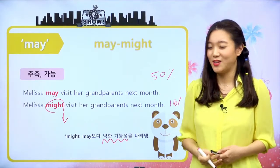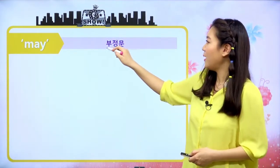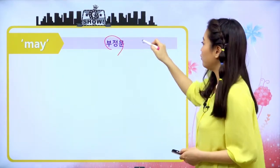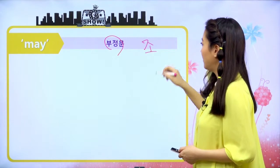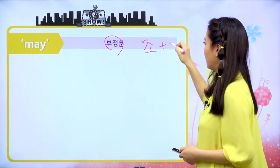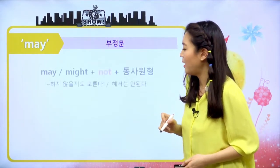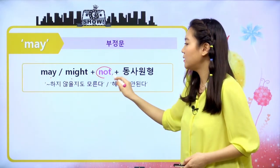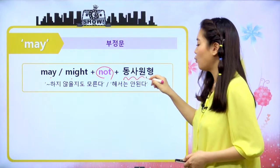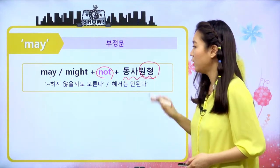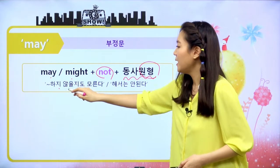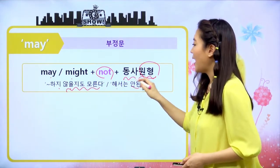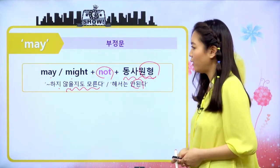may의 부정문은 어떻게 만들까요? 조동사 부정문은 조동사 뒤에 not이 오고, 뒤에 항상 동사 원형이 오죠. 해석은 '뭐뭐하지 않을지도 모른다' 혹은 '뭐뭐해서는 안 된다'가 되겠어요. 예문: 'Sam may not come on time' — Sam은 제 시간에 오지 않을지도 몰라. 'Sam might not come on time'도 해석은 같지만, may가 가능성이 높고 might가 가능성이 낮다는 차이가 있어요.